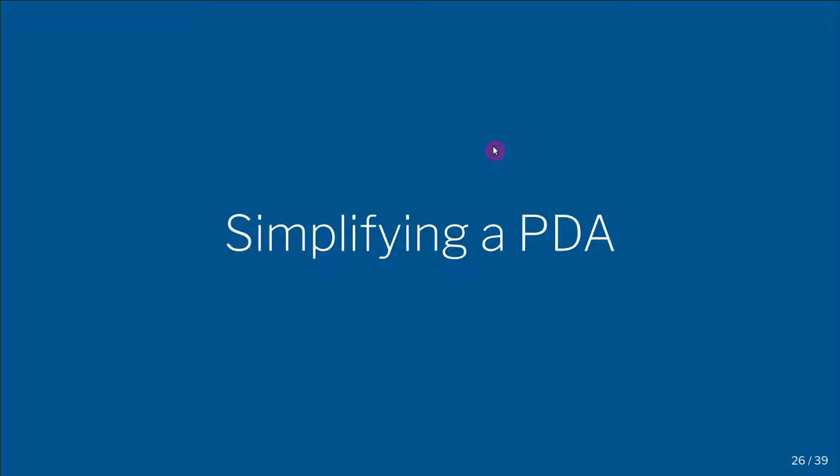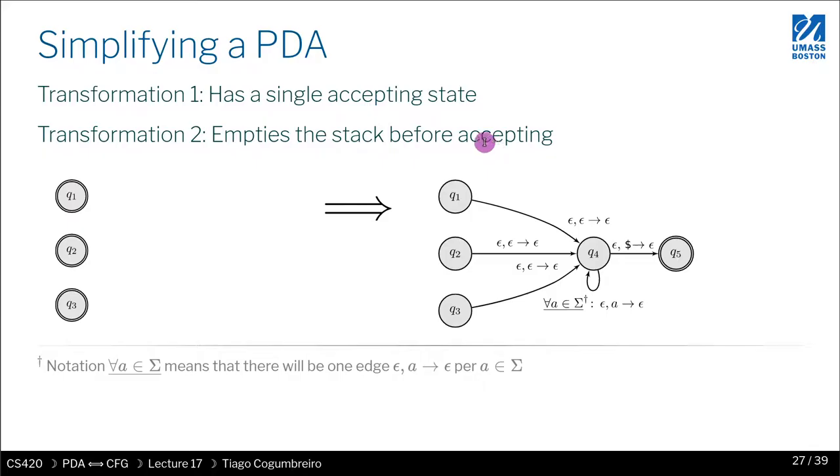Let us see in more detail how we simplify a PDA. First thing we do is we need to go for all... We take our original PDA, and we look at all of our accepting states. And then what we need to do is we connect all of them to a central state, a new state that we create.